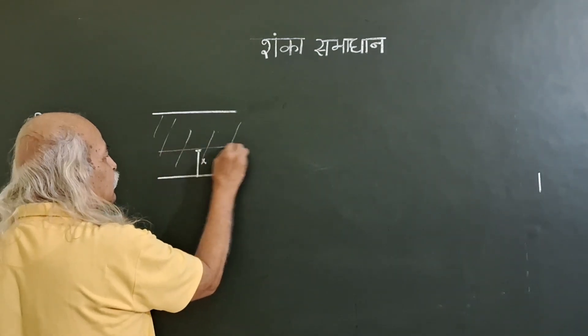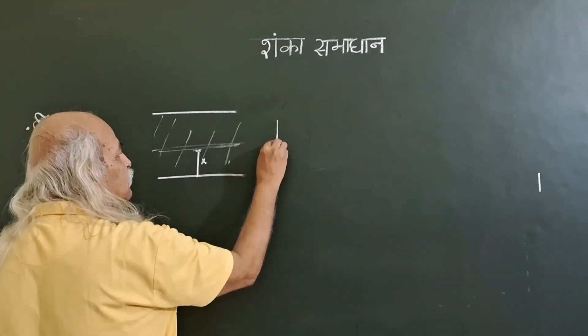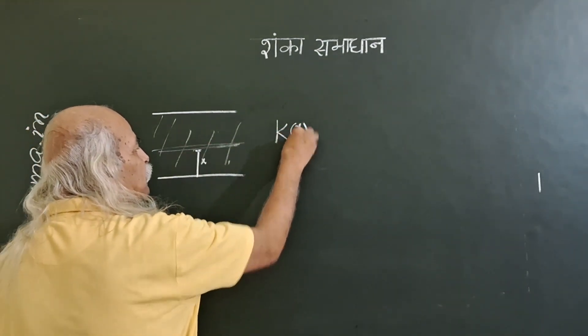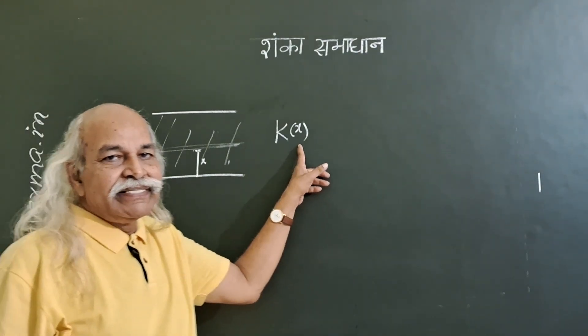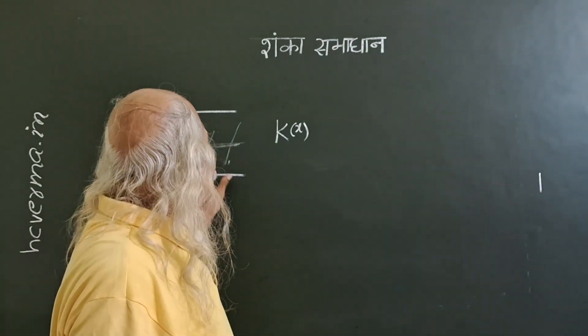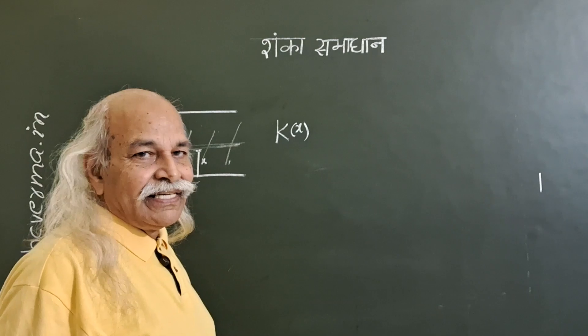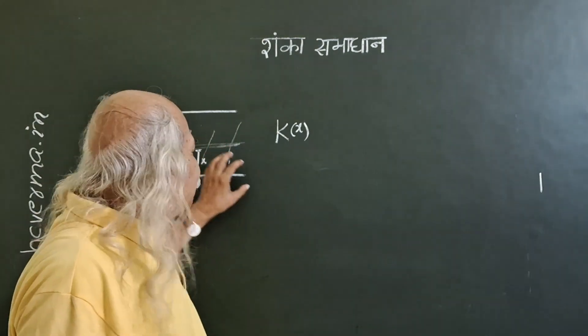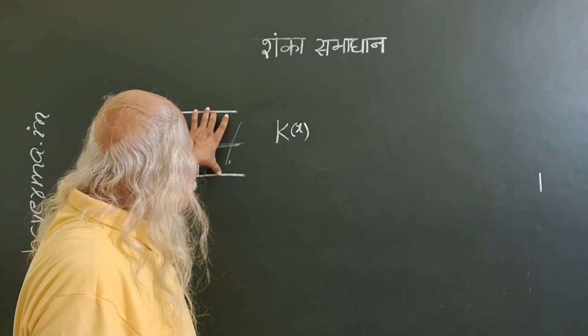The dielectric constant depends on this distance x. So here in this layer, the dielectric constant will be k which is a function of x. So as x changes, this dielectric constant changes.